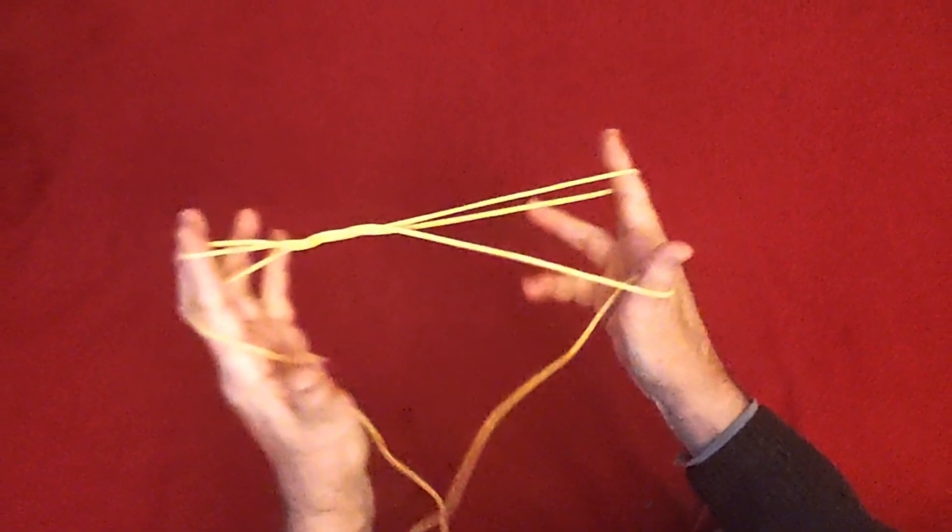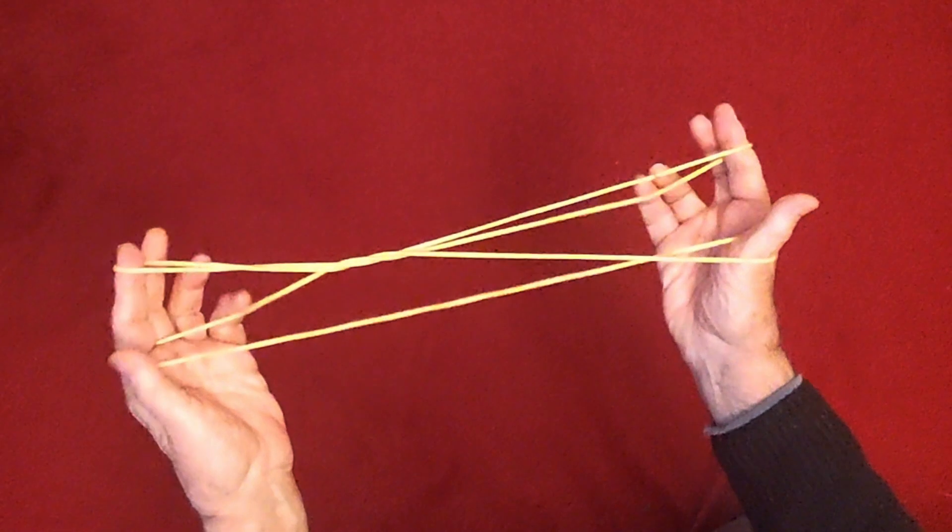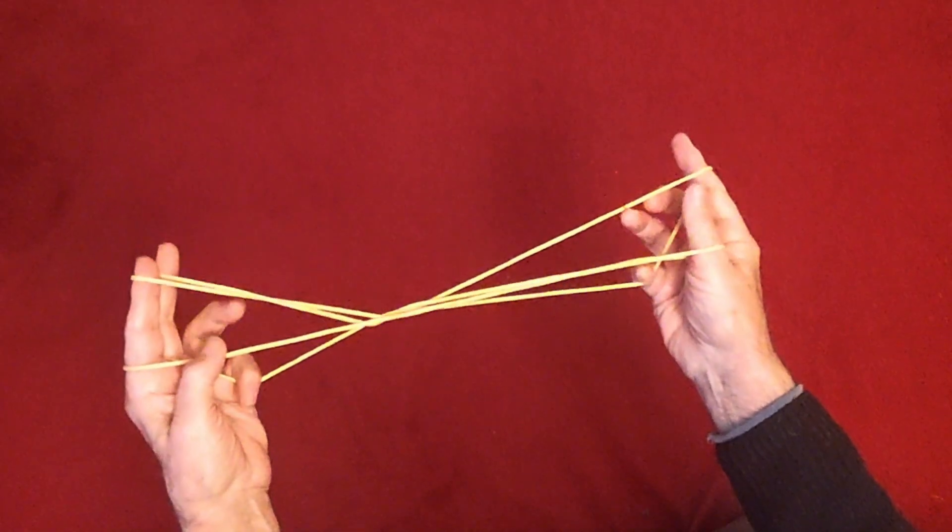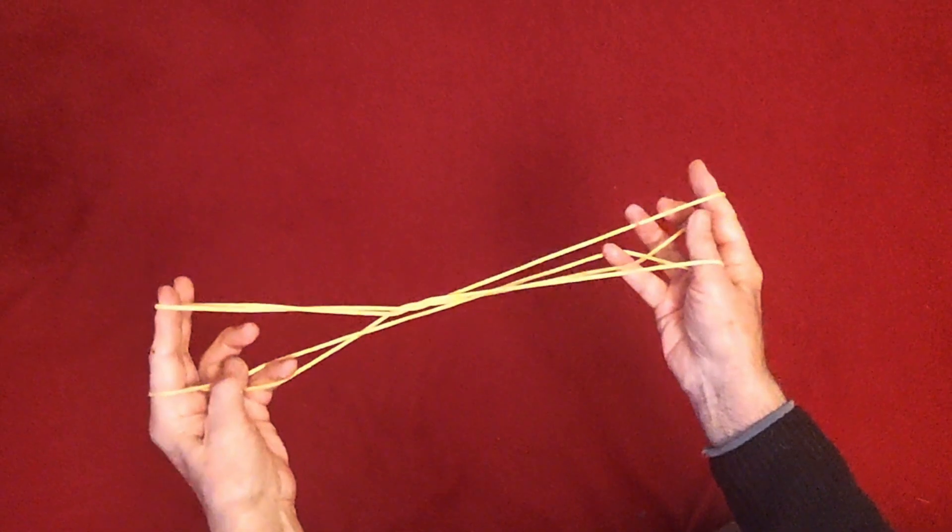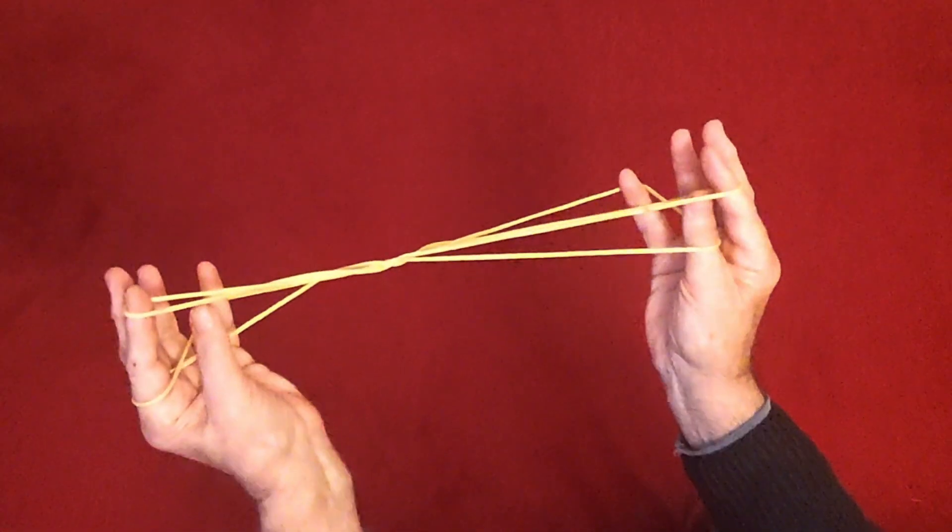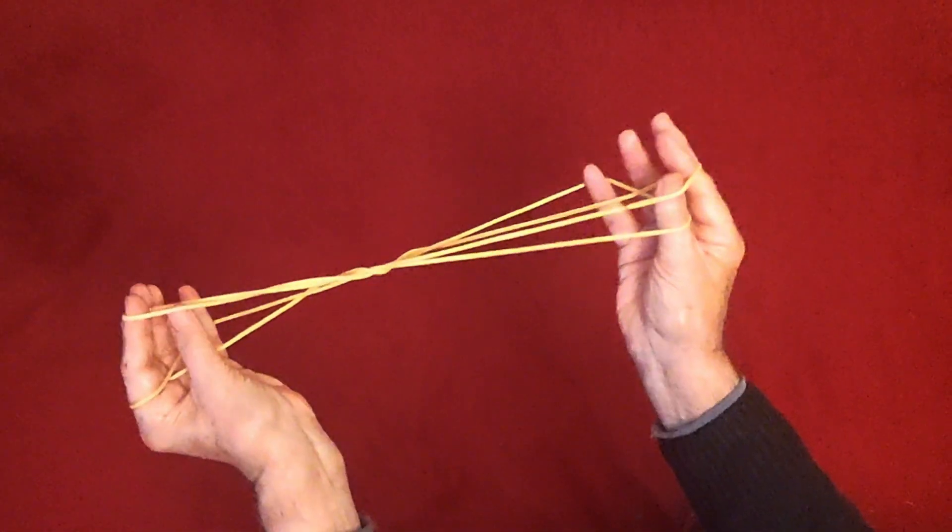Don't drop any more strings, keep coming back. Now the little fingers come over the upper index string, the far side, and draw back the string that's lying across there and pull it back.